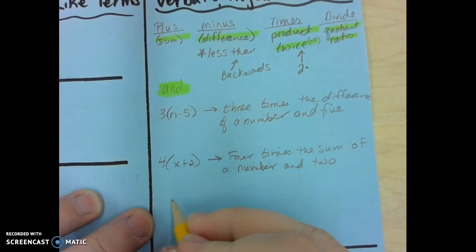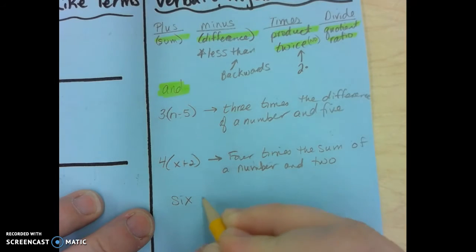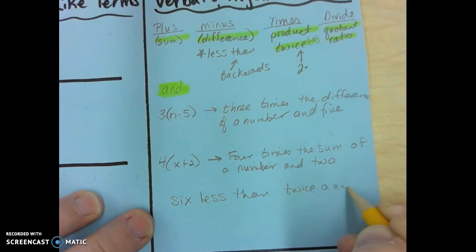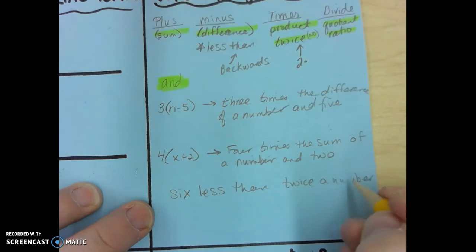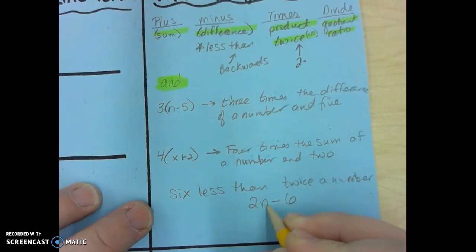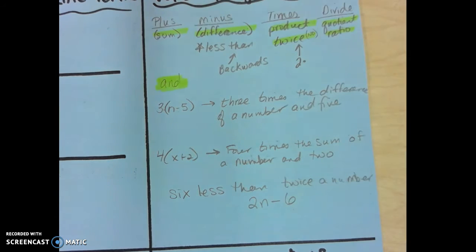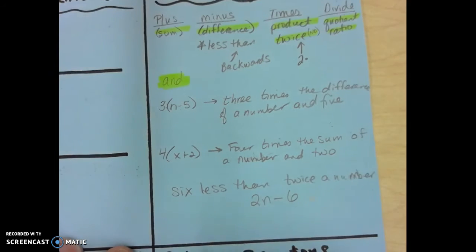And then I could also give you a word problem where I say, let's say I give you six less than twice a number. So six less than is backwards, and so it has to be minus six. And then twice a number would be 2n.